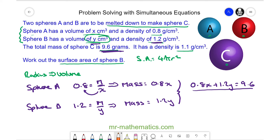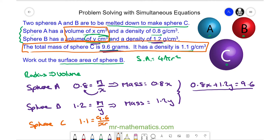Our other equation we can get using this information. For sphere C, the density 1.1 equals the mass 9.6 divided by the volume. The volume will be the sum of sphere A and B, which is X plus Y. We can rearrange to get 1.1 times X plus Y equals 9.6. Expanding the brackets, we have 1.1X plus 1.1Y equals 9.6.